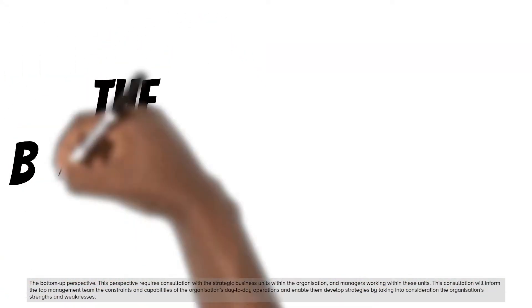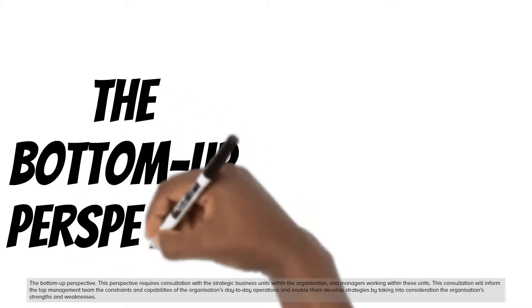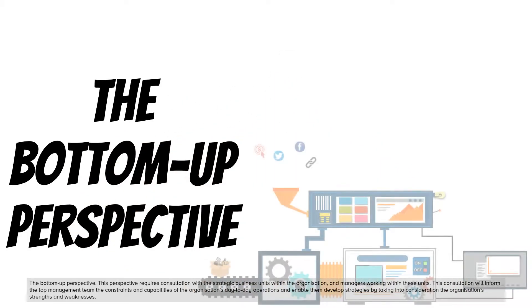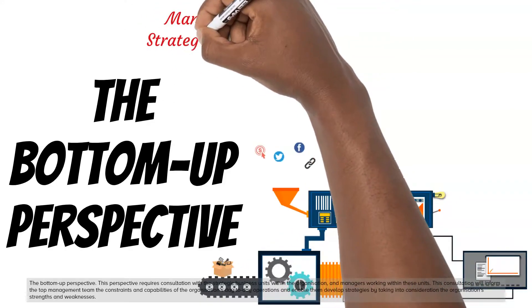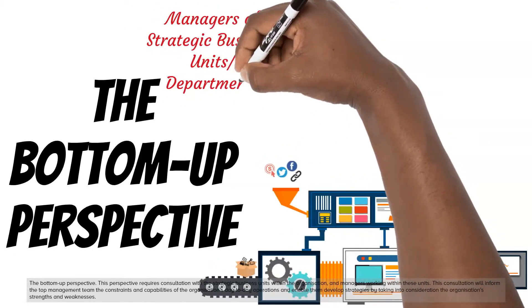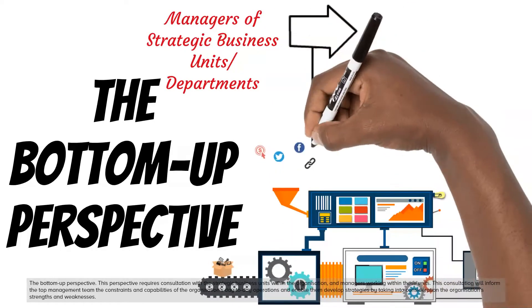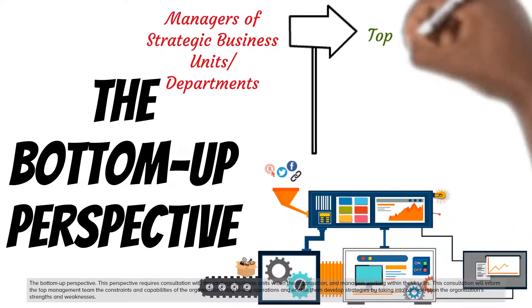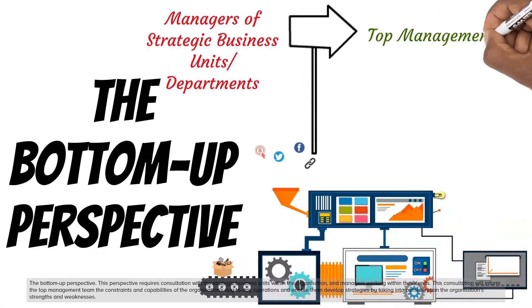The bottom-up perspective requires consultation with the strategic business units within the organization and managers working within these units. This consultation will inform the top management team of the constraints and capabilities of the organization's day-to-day operations, and enable them to develop strategies by taking into consideration the organization's strengths and weaknesses.